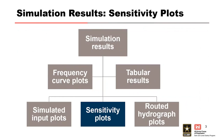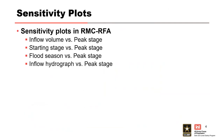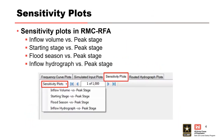Simulated input plots display the actual sampled values for each of the input parameters for every single realization, whether you're running the single or the full uncertainty. Sensitivity plots can be found for each simulation in the sensitivity plot tab shown here. There are four sensitivity plots: infill volume versus peak stage, starting stage versus peak stage, flood seasonality versus peak stage, and infill hydrograph versus peak stage.